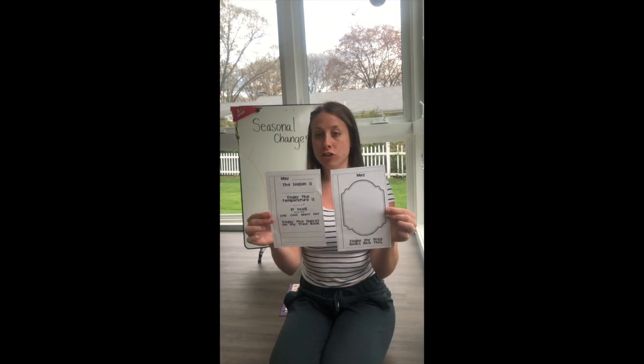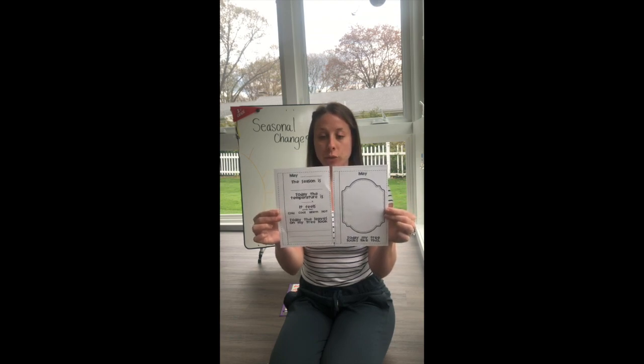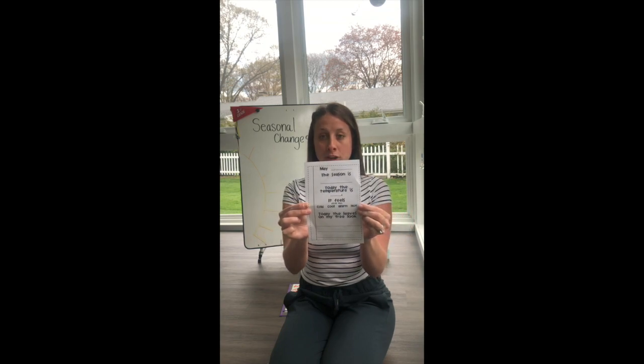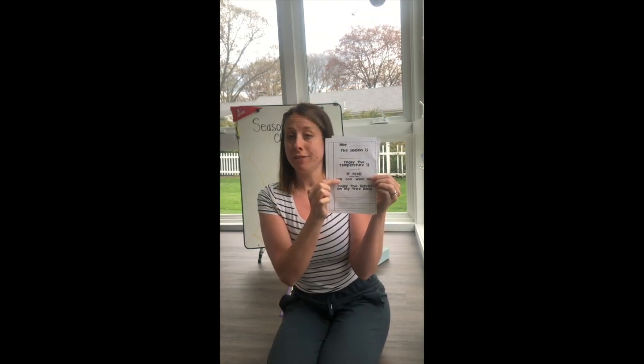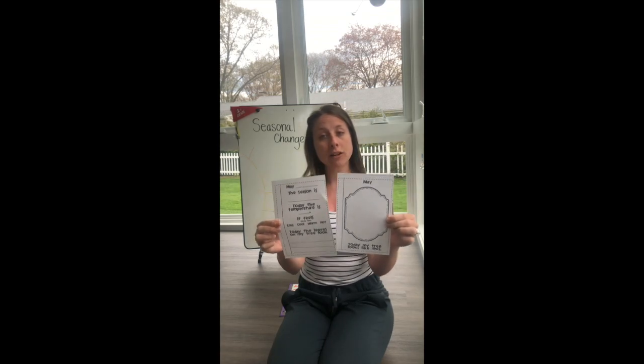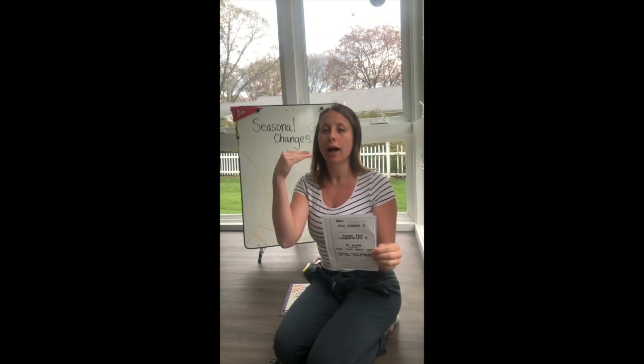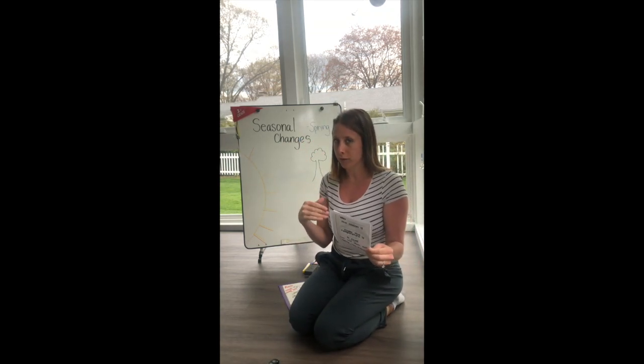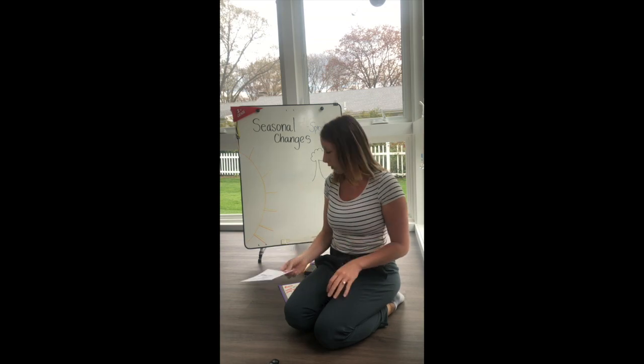Before we get started on our spring tree observations, I just wanted to remind you guys what the worksheet looks like. We have the information page where we record today's date, the season that we're in, and the temperature. We record how it feels outside, and then the bottom part we have to finish that sentence starter. The second page is the blank template where you're going to draw your observations. Before we get started, we need to recap what our fall and our winter tree observations looked like and what we wrote on those information pages.